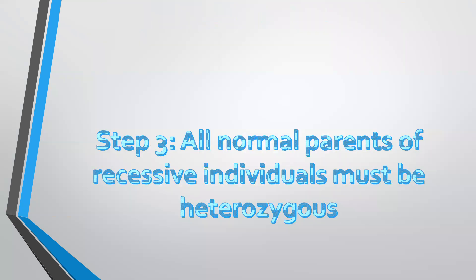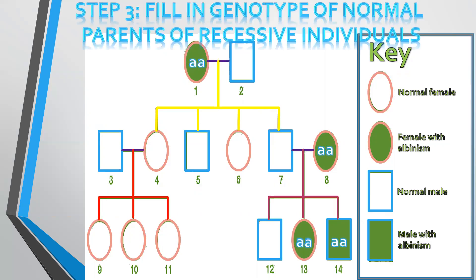The third step: the normal parents of the recessive individuals must be heterozygous. So if you look here, individual number one and number eight, their parents are not indicated, but individuals number 13 and 14, they share the same parents. So if you're looking at number 13, it has two small letter A's. One of them would have come from the mother, number eight, and the other one had to come from the father, which is number seven. And number seven being a normal individual, he has to have the dominant allele as well. So number seven has to be heterozygous. There's no way in which it could have been homozygous. If it had two of the capital letter A's, there's no way in which he would have had offspring number 13 and 14, which have albinism.